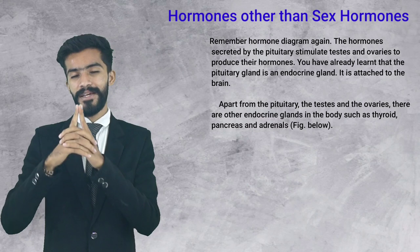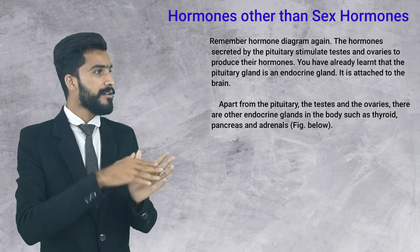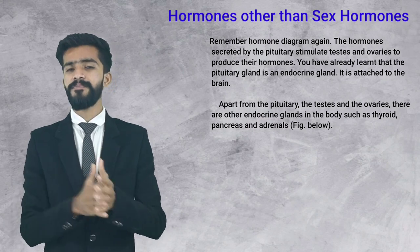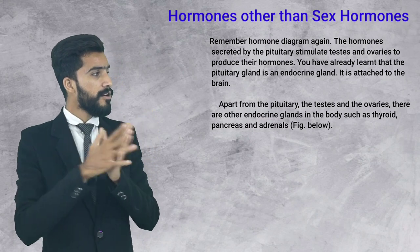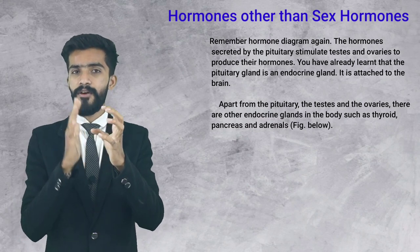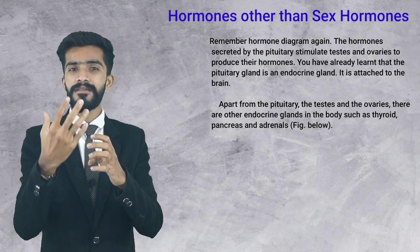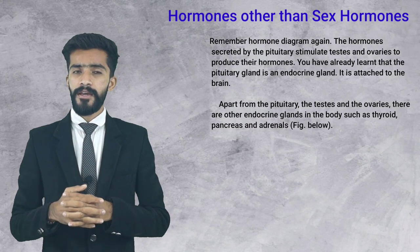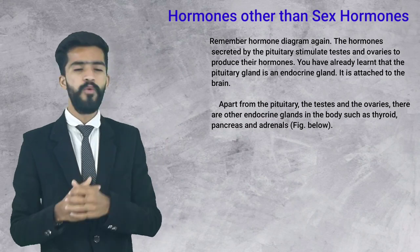The pituitary gland is attached to the brain. Apart from the pituitary, the testes and the ovaries, there are other endocrine glands in the body. The pituitary gland is also an endocrine gland, the testes and ovaries are also endocrine glands, and there are other endocrine glands present in our body such as the thyroid, pancreas, and adrenals.